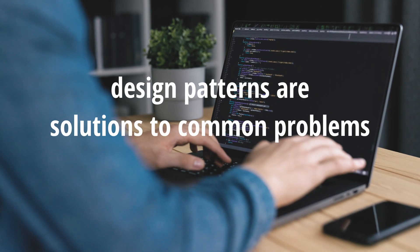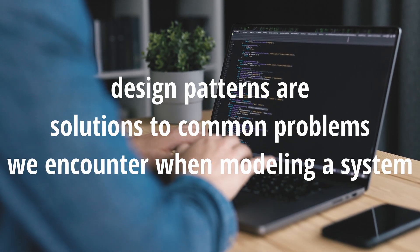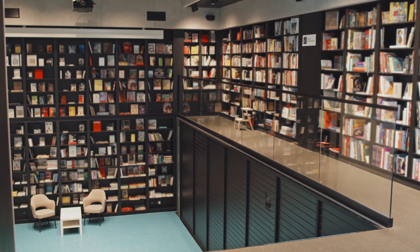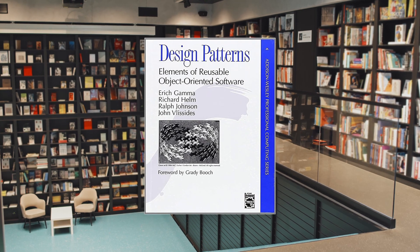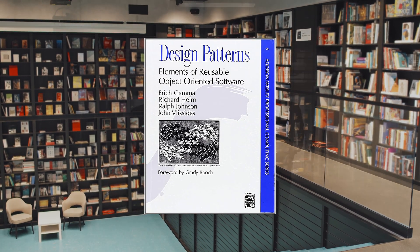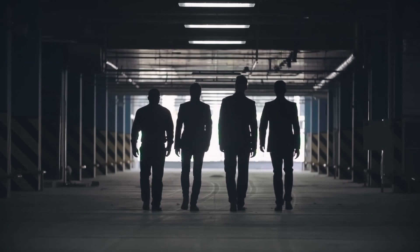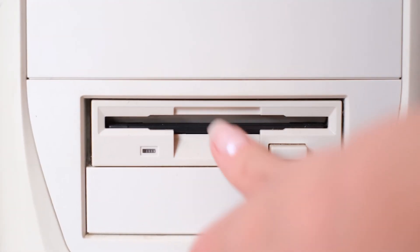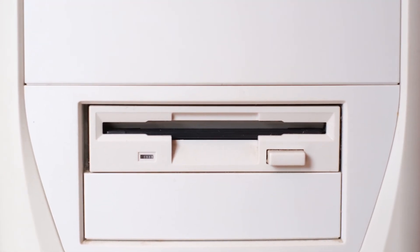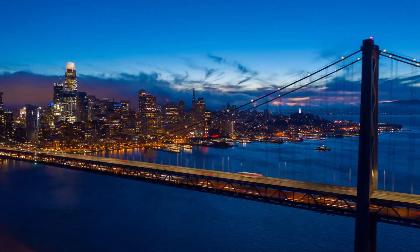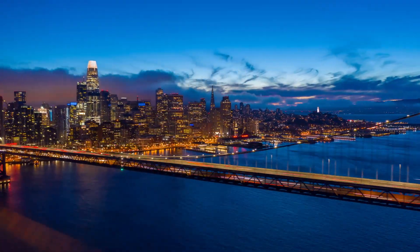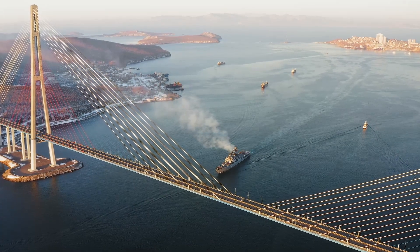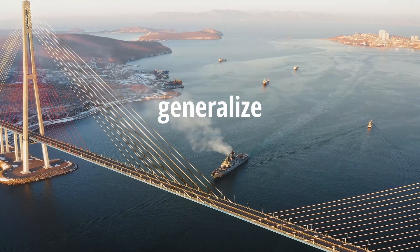Design patterns are solutions to common problems we encounter when trying to model a system. One of the most influential books on this topic is Design Patterns: Elements of Reusable Object-Oriented Software, also known as the Gang of Four book because of its authors. Despite being published back in 1994, its patterns are used even today in most code bases and leading frameworks, no matter the programming language. The reason why design patterns are so popular is that they allow us to generalize our model.